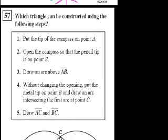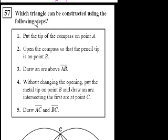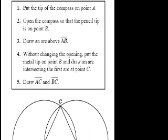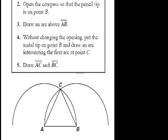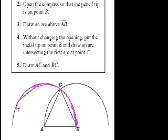Problem 57. Which triangle can be constructed using the following steps? Put the tip of the compass on point A, open the compass so that the pencil tip is on point B, and draw an arc above AB — that's this arc right here that I'm trying to color in.